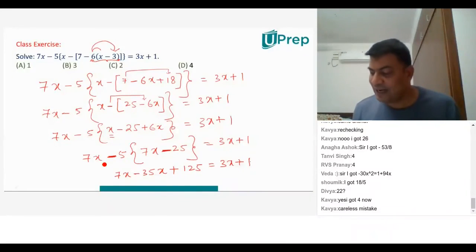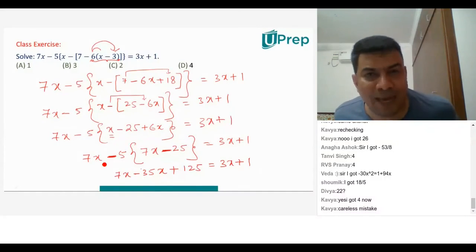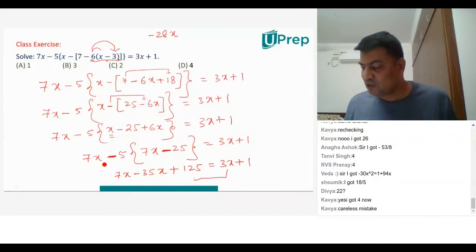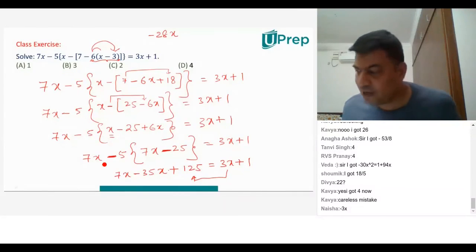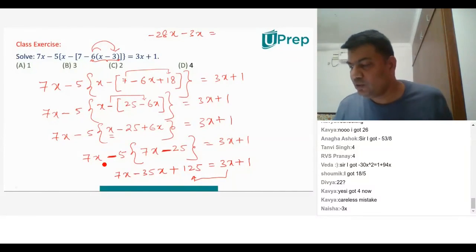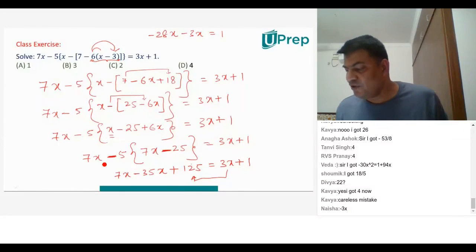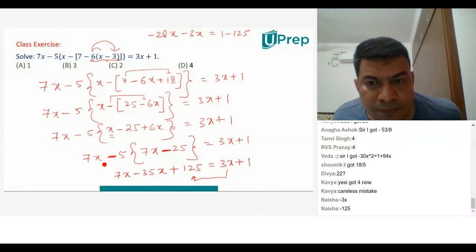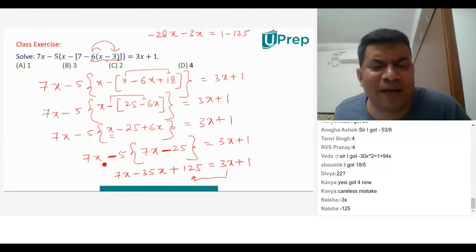So you have 7x minus 35x, which is minus 28x. Your 3x which is on the right-hand side — if it comes on the left-hand side it will become minus 3x. That should be equal to: you have 1 there and 125. If 125 goes on the right-hand side, it becomes minus 125. Pranay says we can send that minus 28x to the right-hand side. Few people don't understand if I take it directly that side, so let's relax.